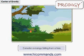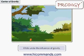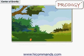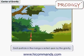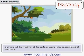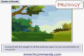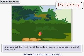Consider a mango falling from a tree. We know that it falls under the influence of gravity. A mango consists of many particles, and each particle is acted upon by gravity. During its fall, the weight of all the particles seem to be concentrated at one point. This point is referred to as center of gravity.